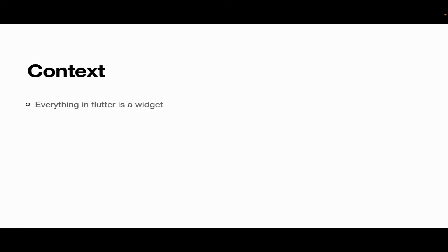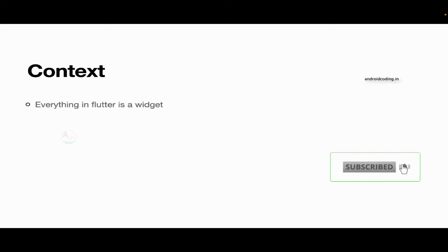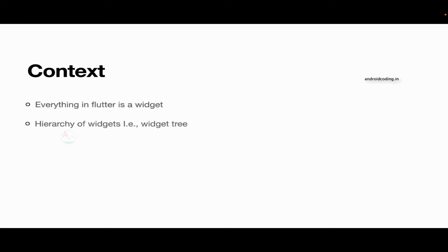These widgets need to be properly handled. For example, if you have multiple text widgets on your screen, how can you display data on a particular text widget? Or how can you handle the button click of a particular widget? If you have 10 buttons on your screen, how can you handle a click on the fifth or sixth button specifically? With the help of context, you can handle all these scenarios.